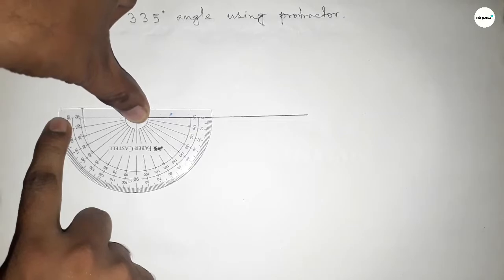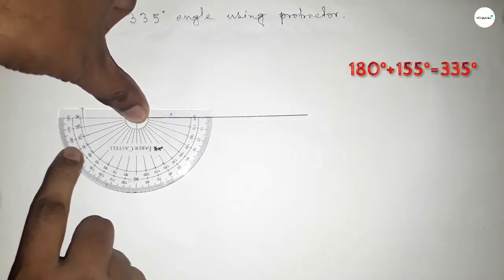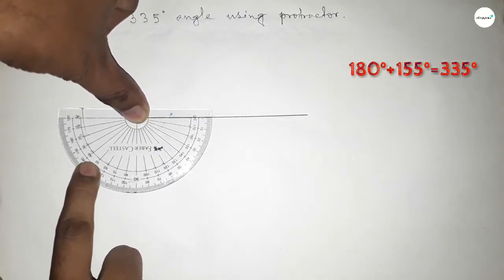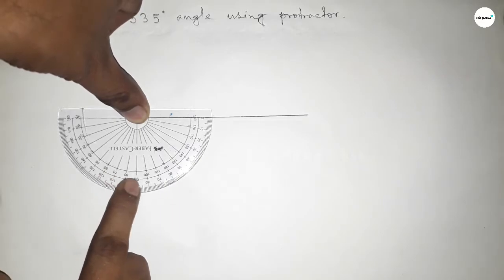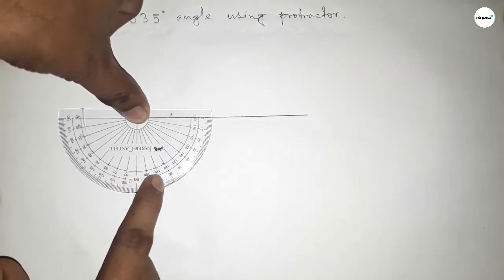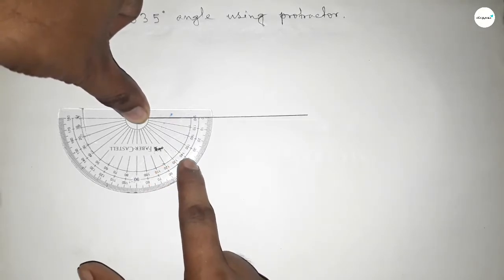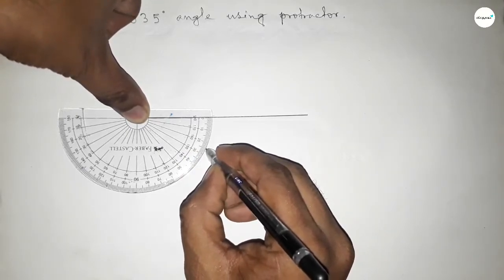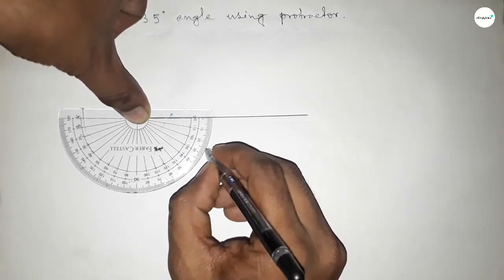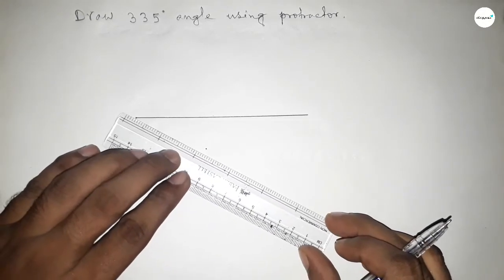So by counting 10, 20, 30, 40, 50, 60, 70, 80, 90, 100, 110, 120, 130, 140, 150, and 155. If you add 155 degrees with 180 degrees, then we can get 335 degrees.